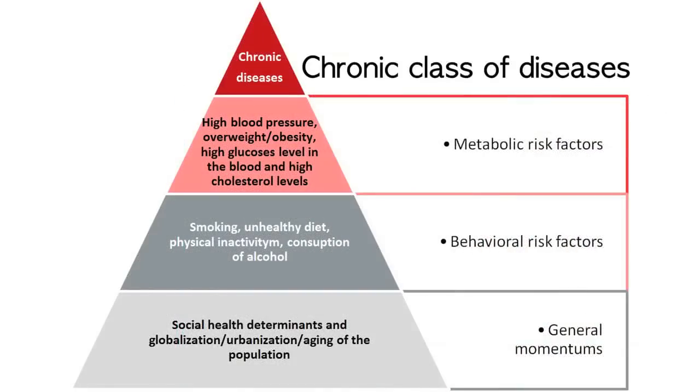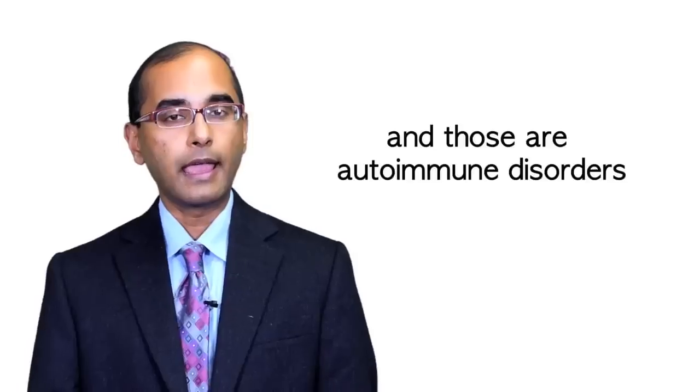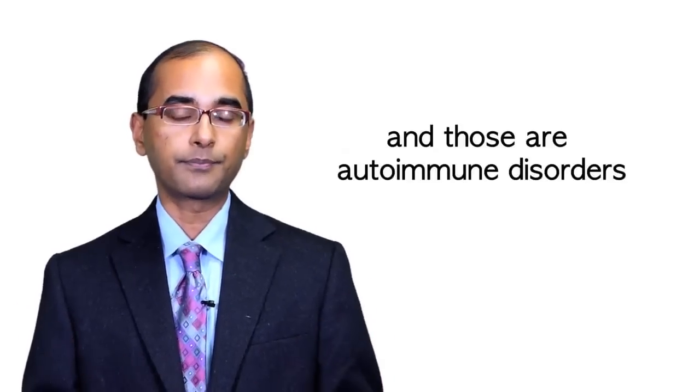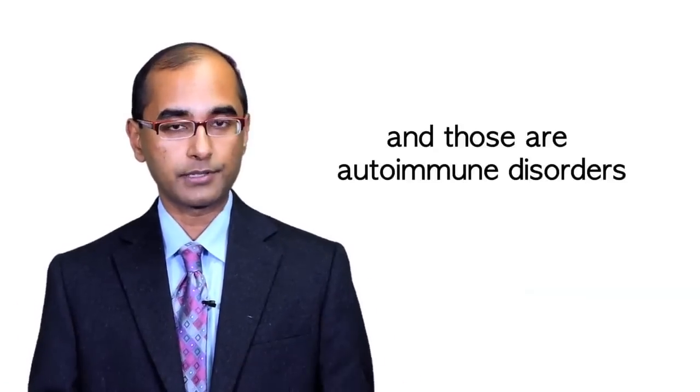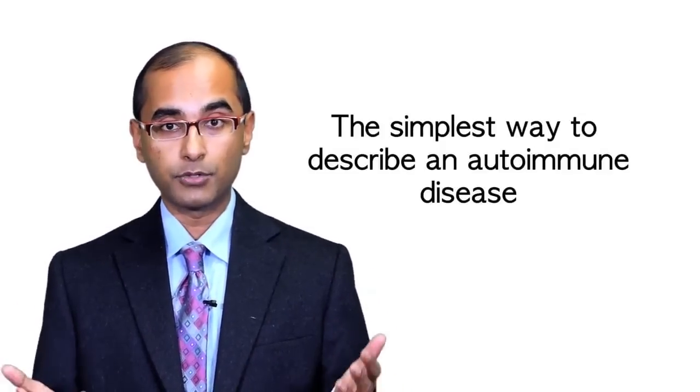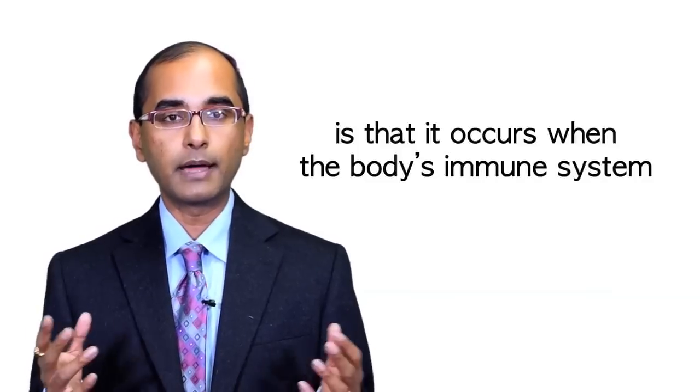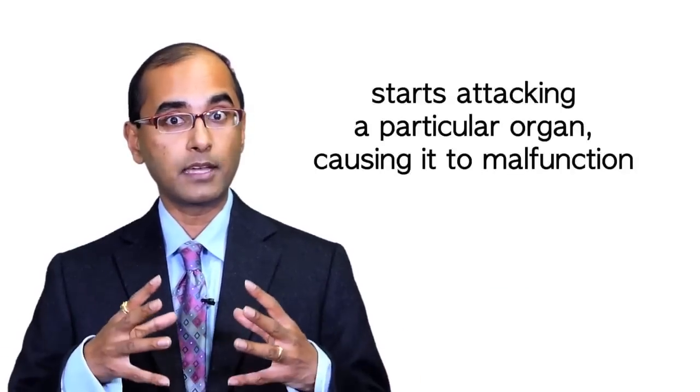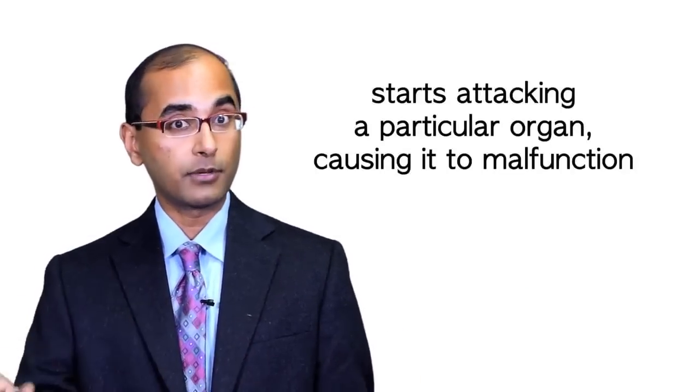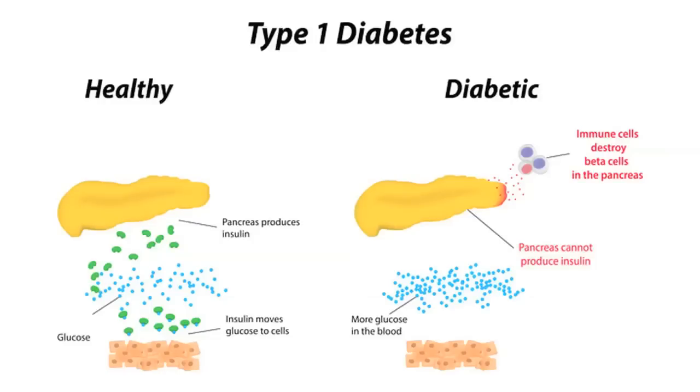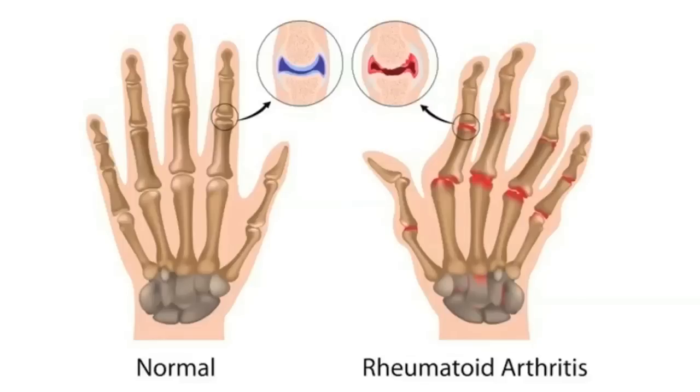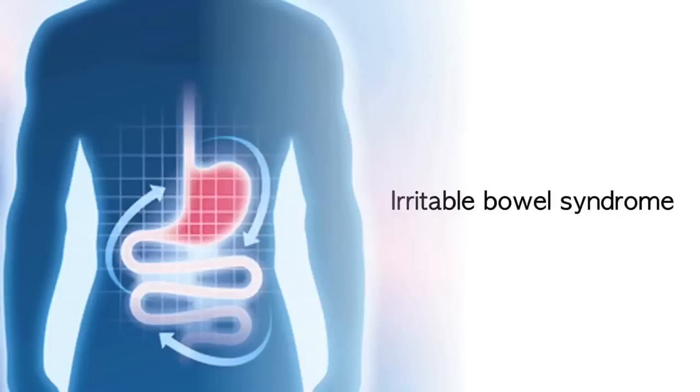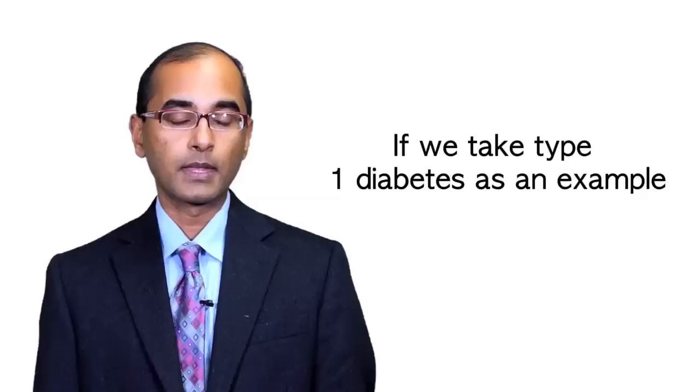Before going any further, I want to talk about the particular stubborn chronic class of diseases in which Erika's disorder falls. And those are autoimmune disorders, which is the topic of our course. The simplest way to define an autoimmune disease is that it occurs when the body's immune system starts attacking a particular organ and causing it to malfunction. Examples of autoimmune diseases are type 1 diabetes, rheumatoid arthritis, Hashimoto's thyroid disease, and irritable bowel syndrome.